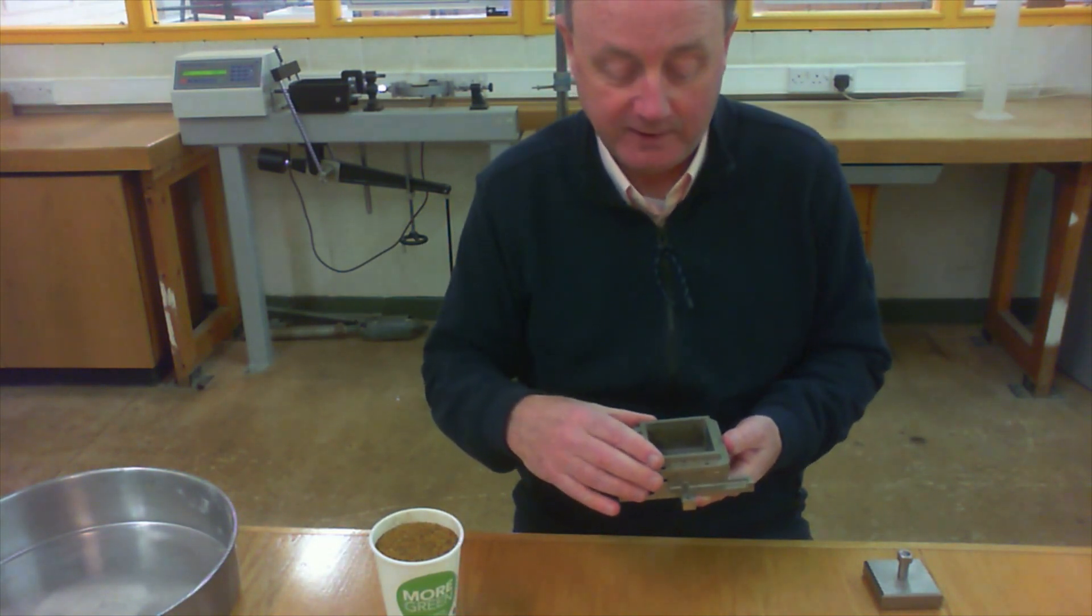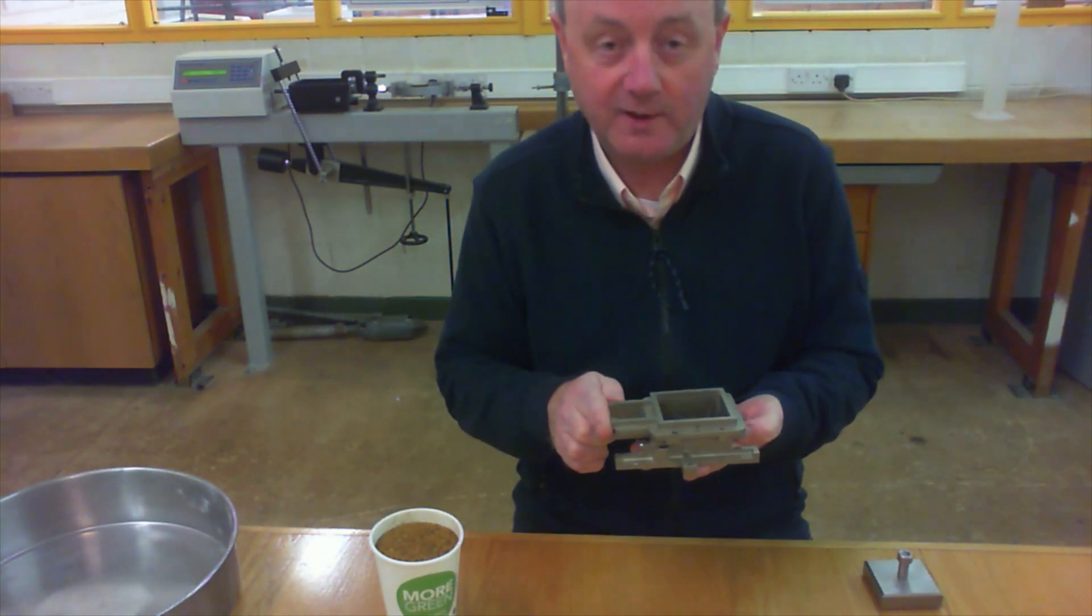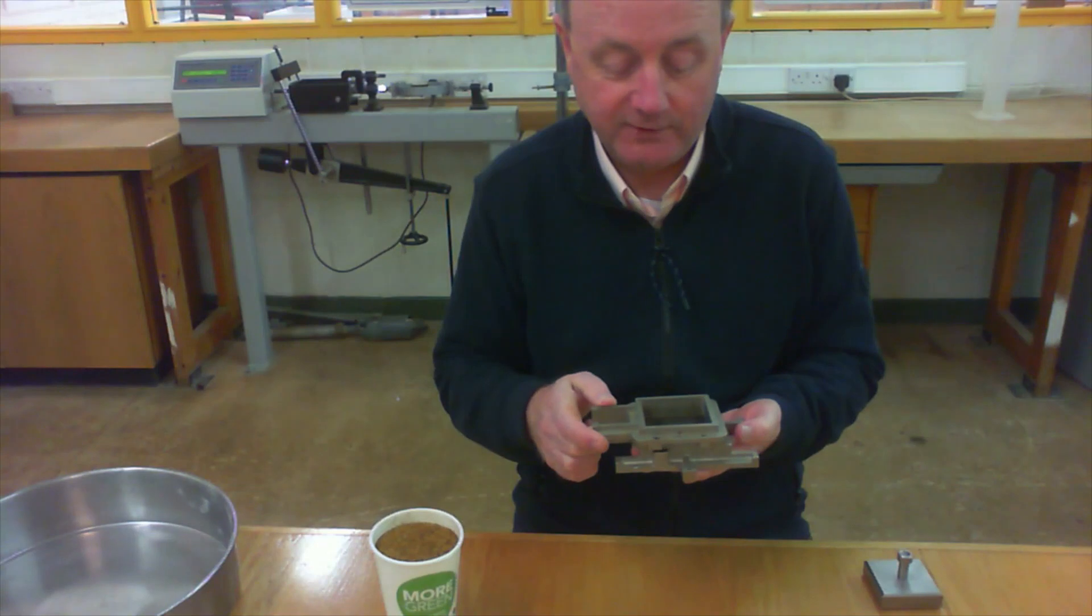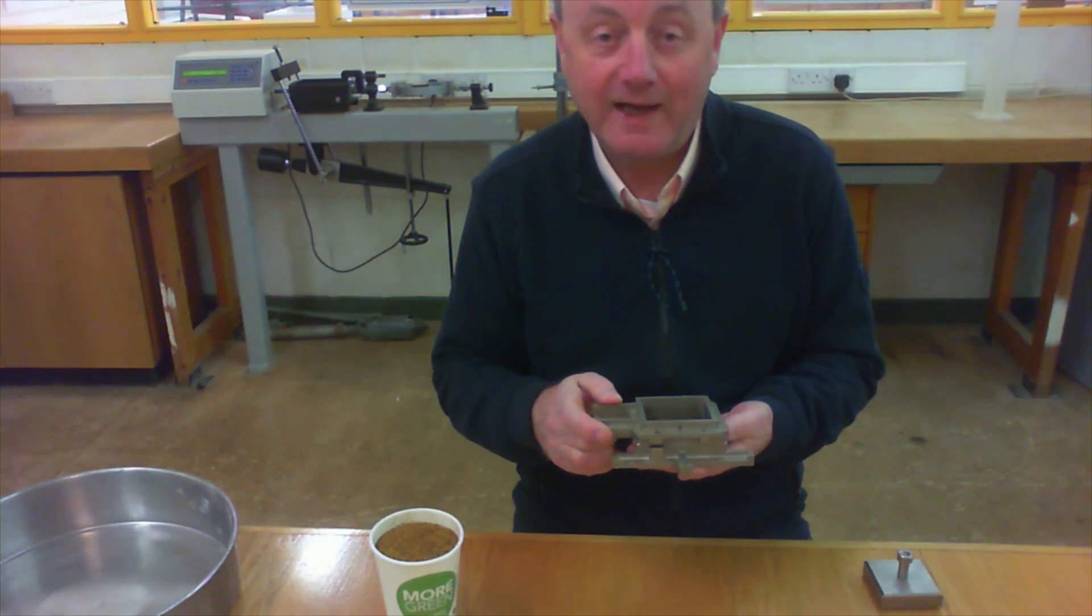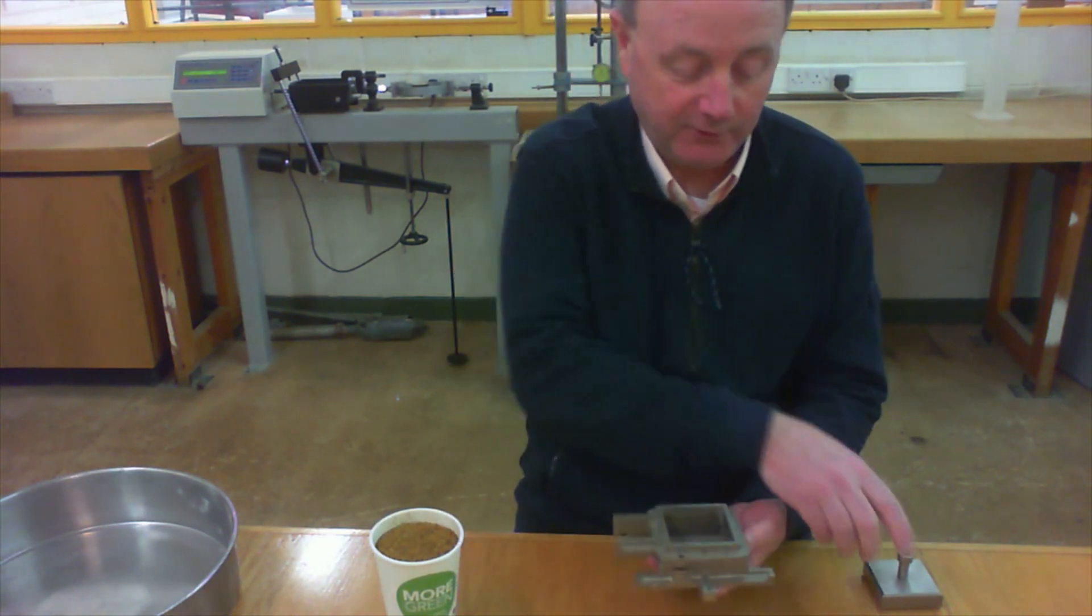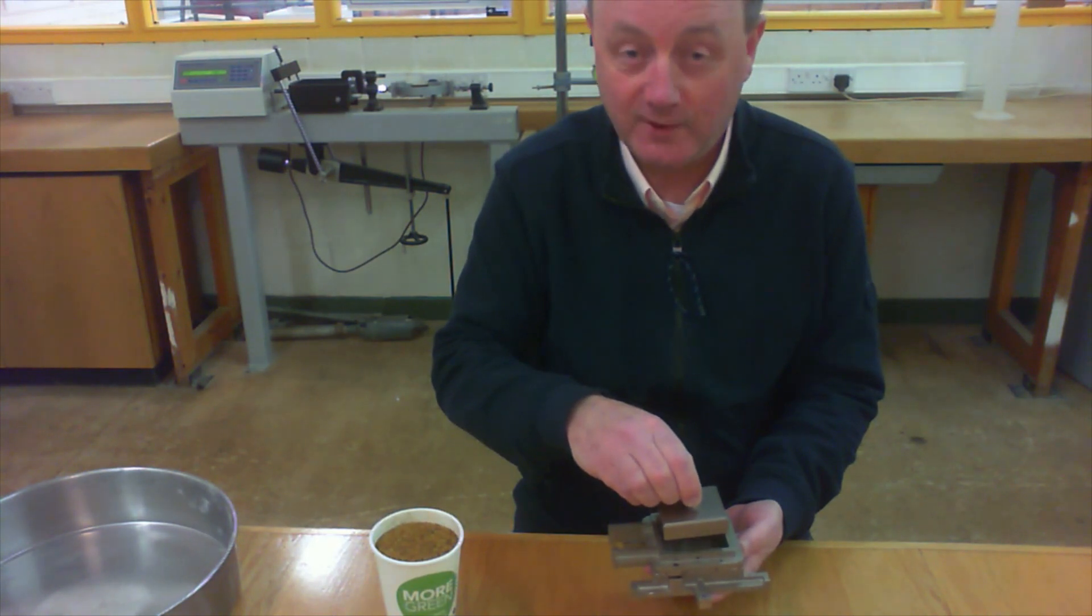But why are there two halves? What we're going to do is slide one half over the top of the other half. The soil inside will shear, it'll undergo shear failure. We're going to generate extra shear resistance by putting a weight cap on top of the sample and putting a load on top of the weight cap.